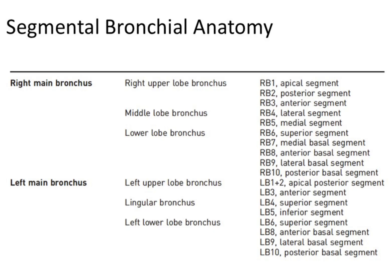We have the middle lobe with the RB4, the lateral segment, and the RB5, the medial segment. And we have the lower lobe bronchus with the RB6, the superior segment, the RB7, the medial basal segment, the RB8, the anterior basal segment, the RB9, the lateral basal segment, and the RB10, the posterior basal segment.